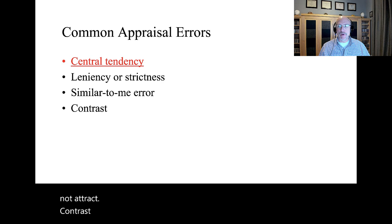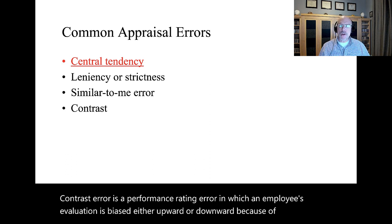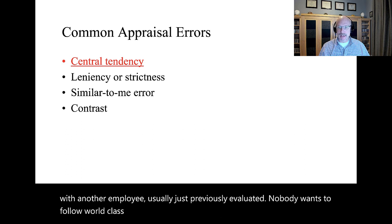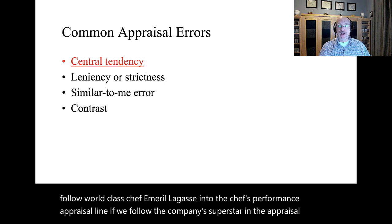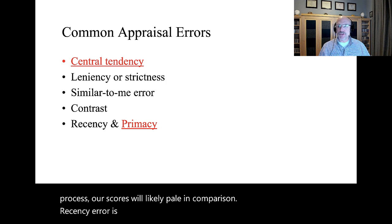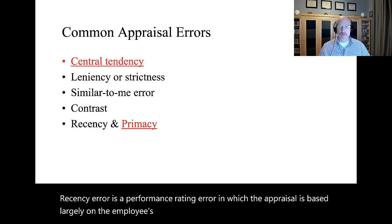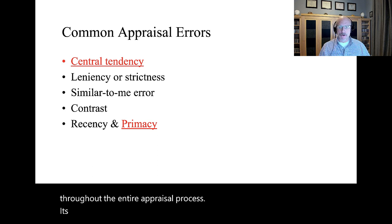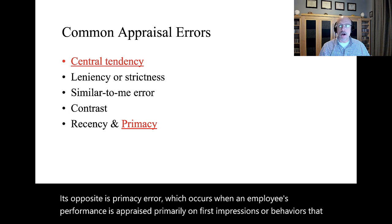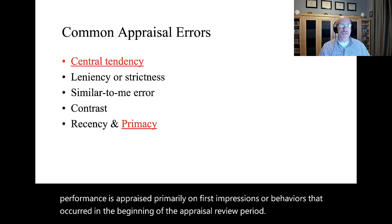Contrast error is a performance rating error in which an employee's evaluation is biased either upward or downward because of a comparison with another employee, usually just previously evaluated. Nobody wants to follow world-class chef Emeril Lagasse into the chef's performance appraisal line — if we follow the company superstar in the appraisal process, our scores will likely pale in comparison. Recency error is a performance rating error in which the appraisal is based largely on the employee's most recent behavior rather than on behavior throughout the entire appraisal period. Its opposite is primacy error, which occurs when performance is appraised primarily on first impressions. Both errors are likely to be equally bad.